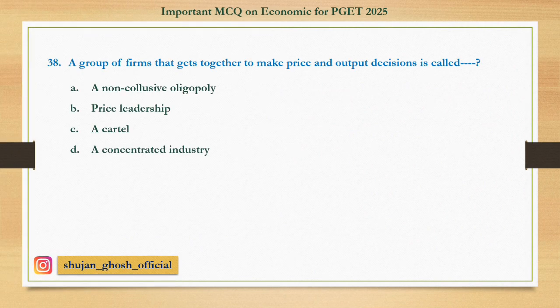Question number thirty-eight: A group of firms that get together to make price and output decisions is called — option A: a non-collusive oligopoly; B: price leadership; C: a cartel; D: a concentrated industry. Answer: a cartel.